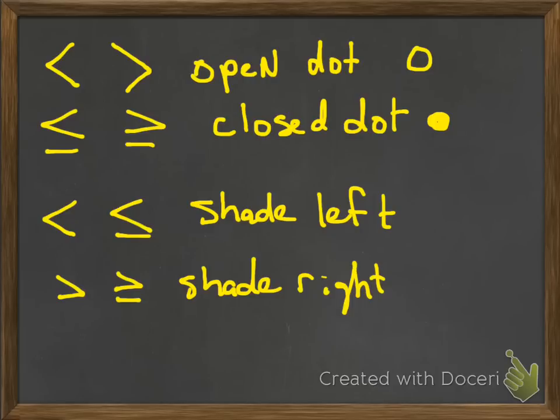Here's some basic little things to help you remember how you should shade and what you should do. Less than or greater than should be an open dot. Less than or equal to, greater than or equal to should be a closed dot. If the variable is on the left-hand side, like you're saying x is less than, x is greater than, shade to the left. And then for greater than, shade to the right. But on all of these, the x should be on this side.